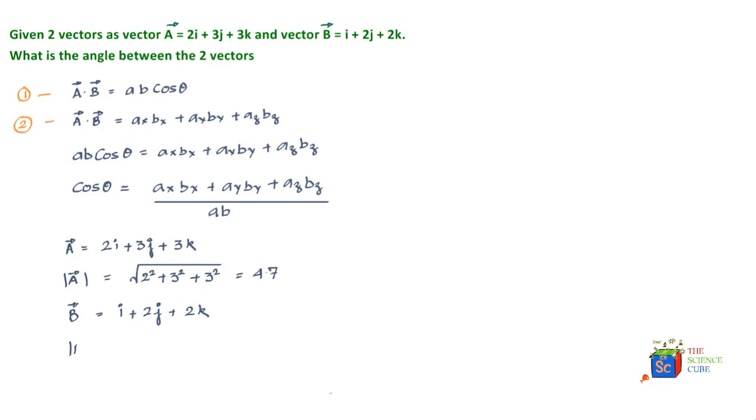Therefore the magnitude of vector B is equal to the square root of 1 squared plus 2 squared plus 2 squared, which is about 3.0. Now with this information and the formula we have derived, it becomes quite simple to calculate the angle between the two vectors.